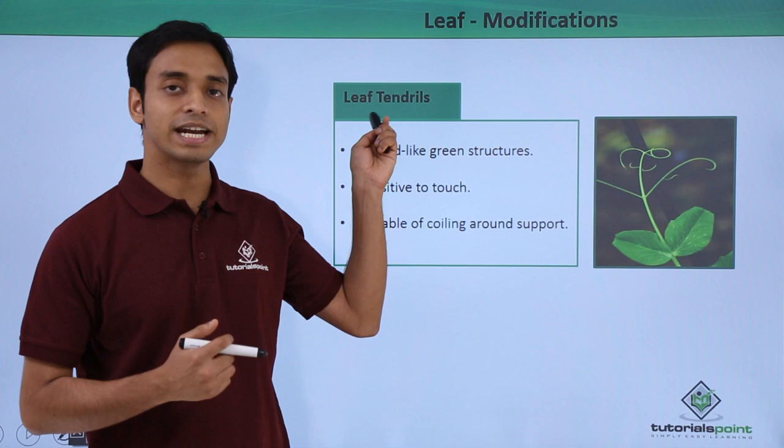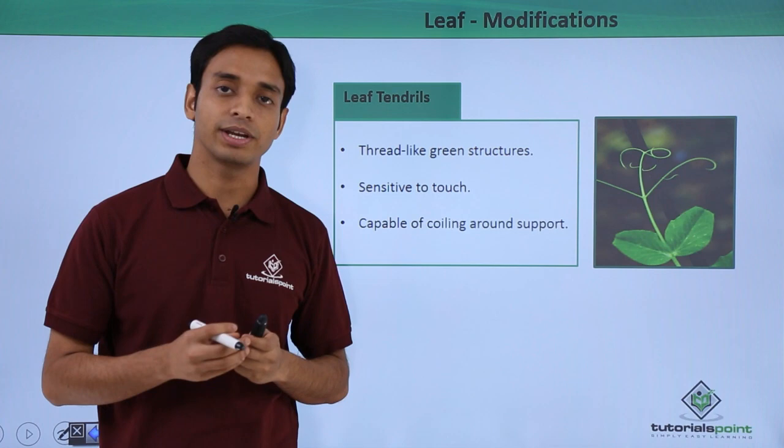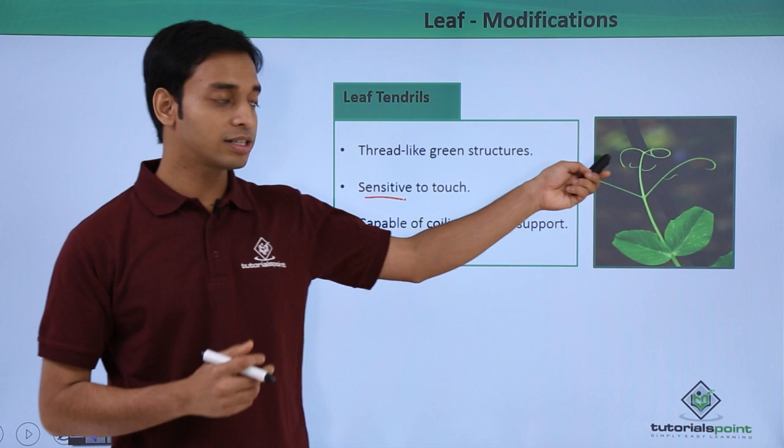Tendrils are nothing but spring-like structures — thread-like green structures, as you can see here. They acquire a structure like that of a spring. These types of leaves are very sensitive to touch; once they touch any support, they start coiling around that support.